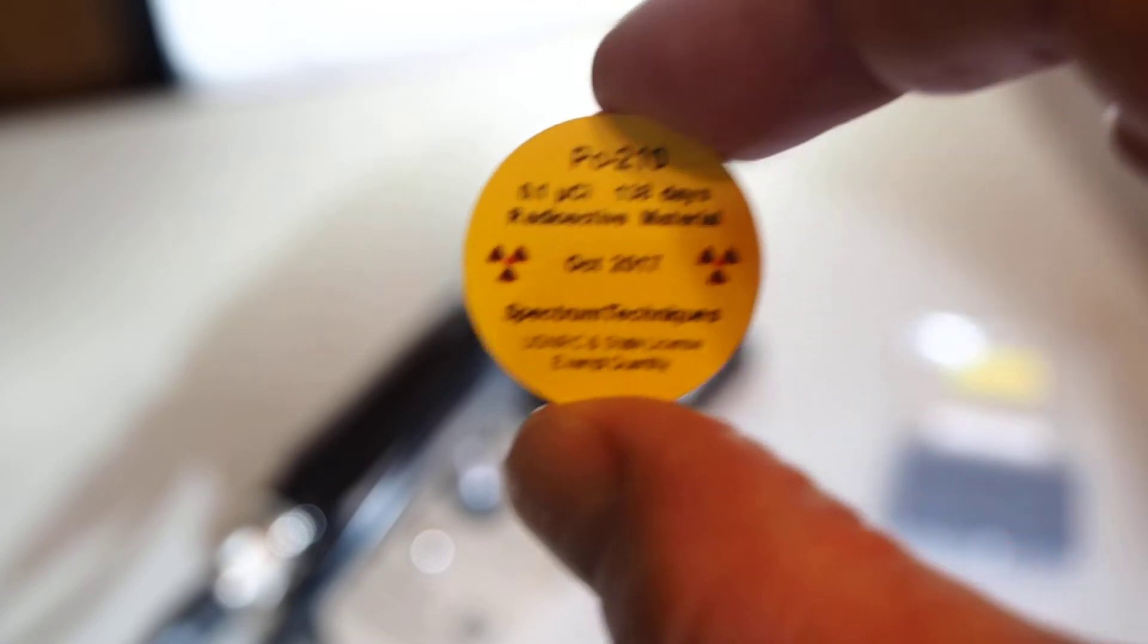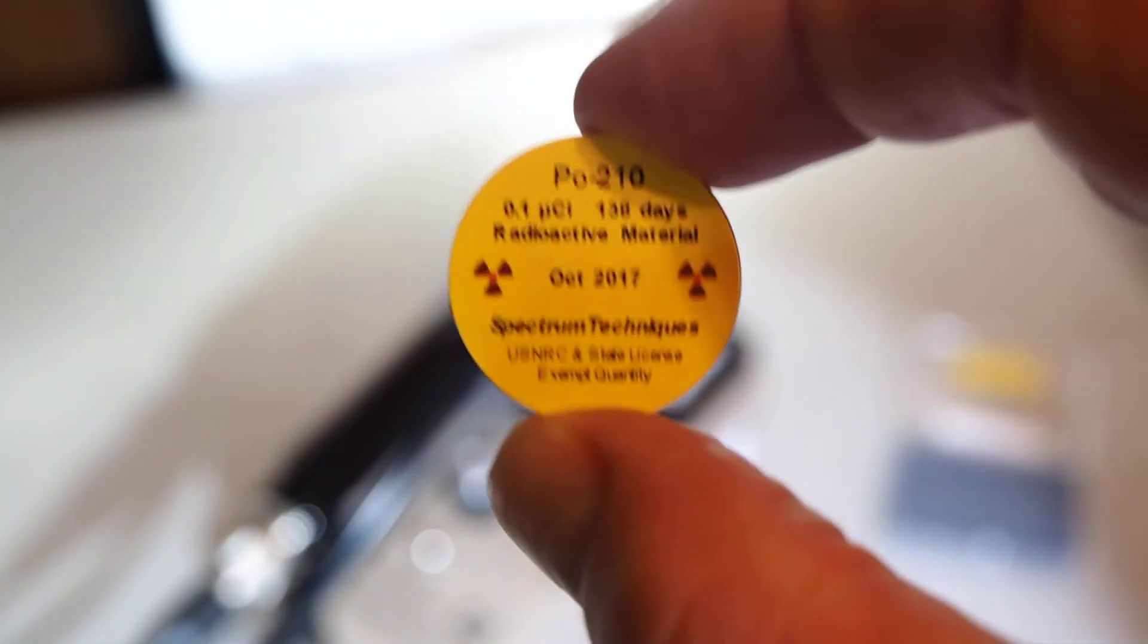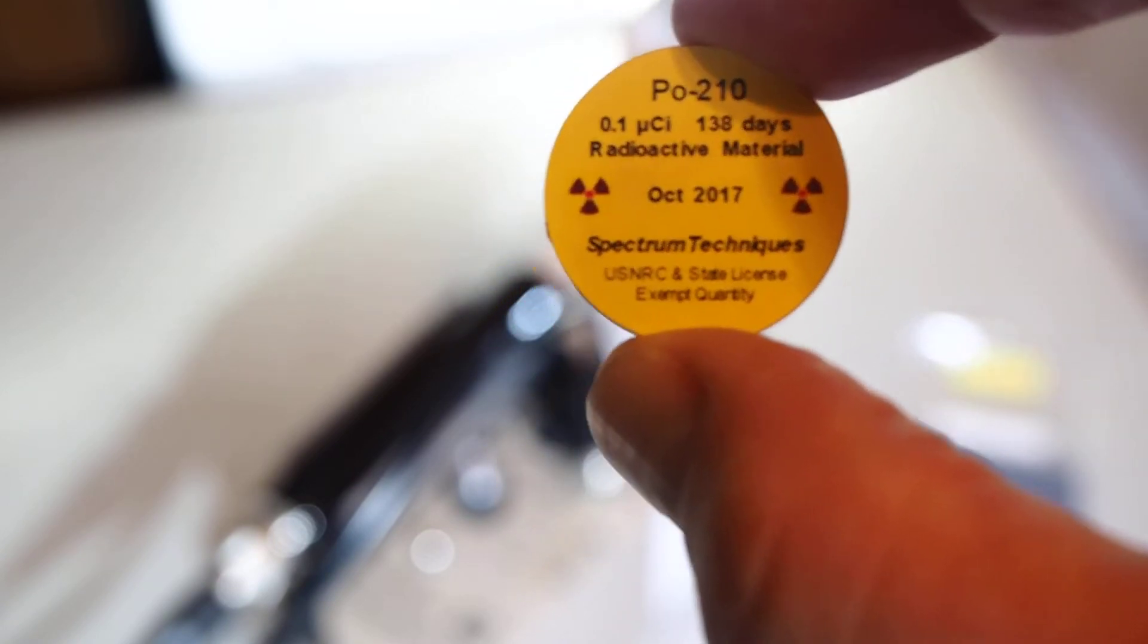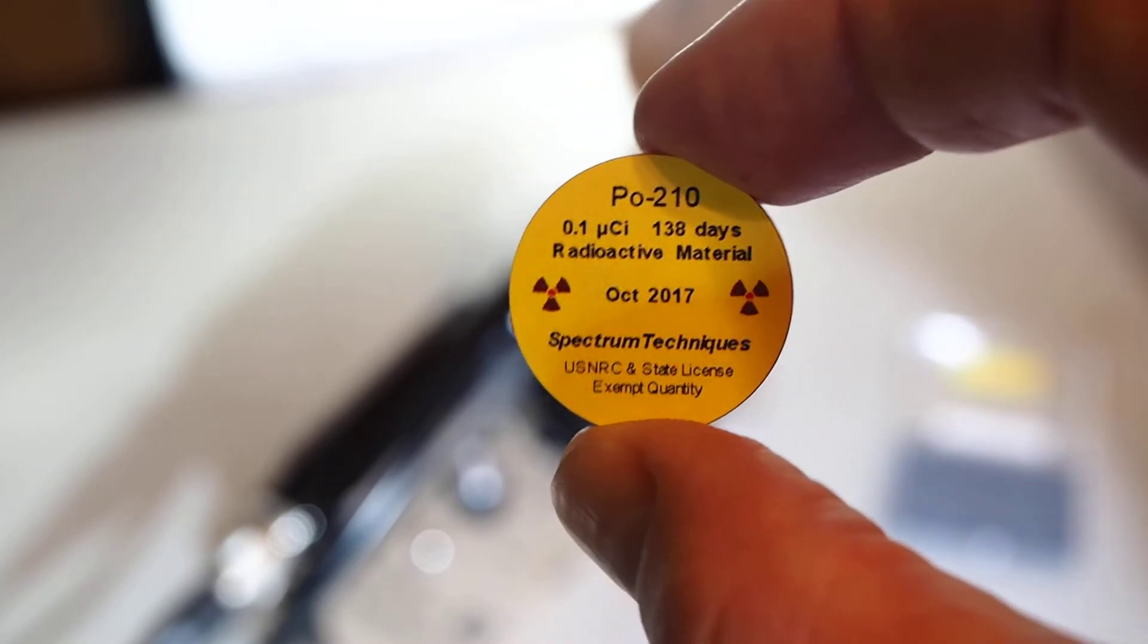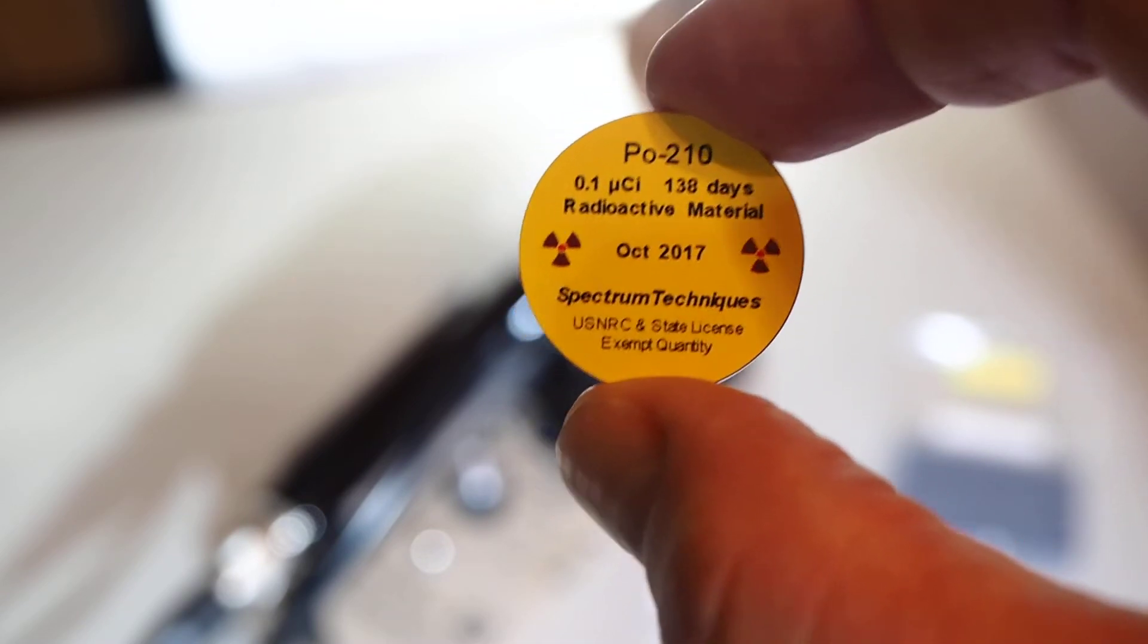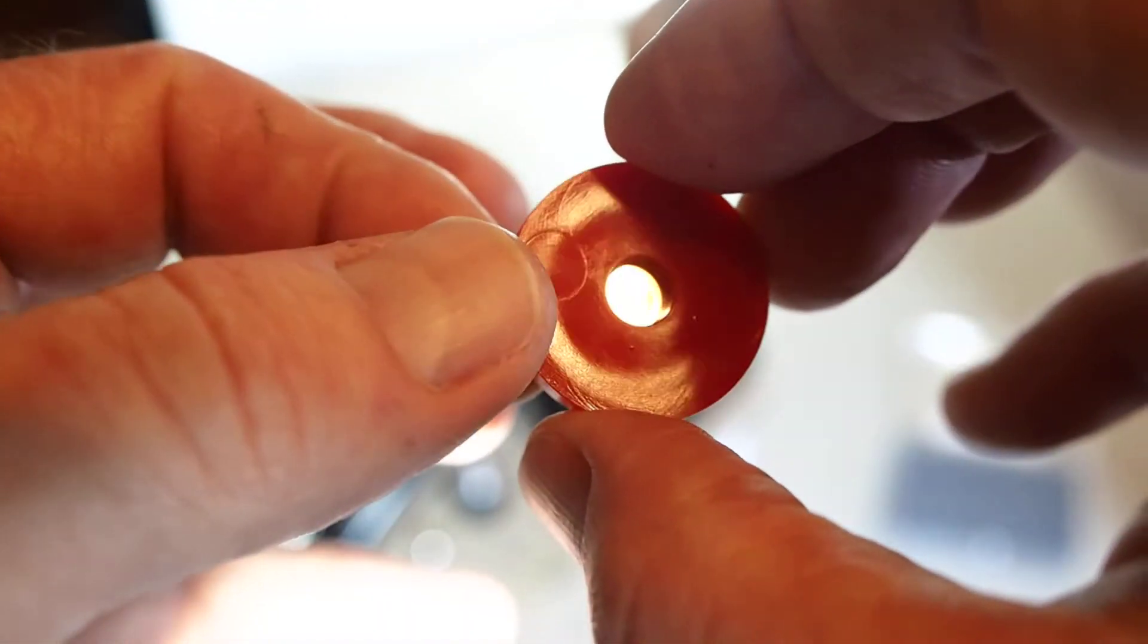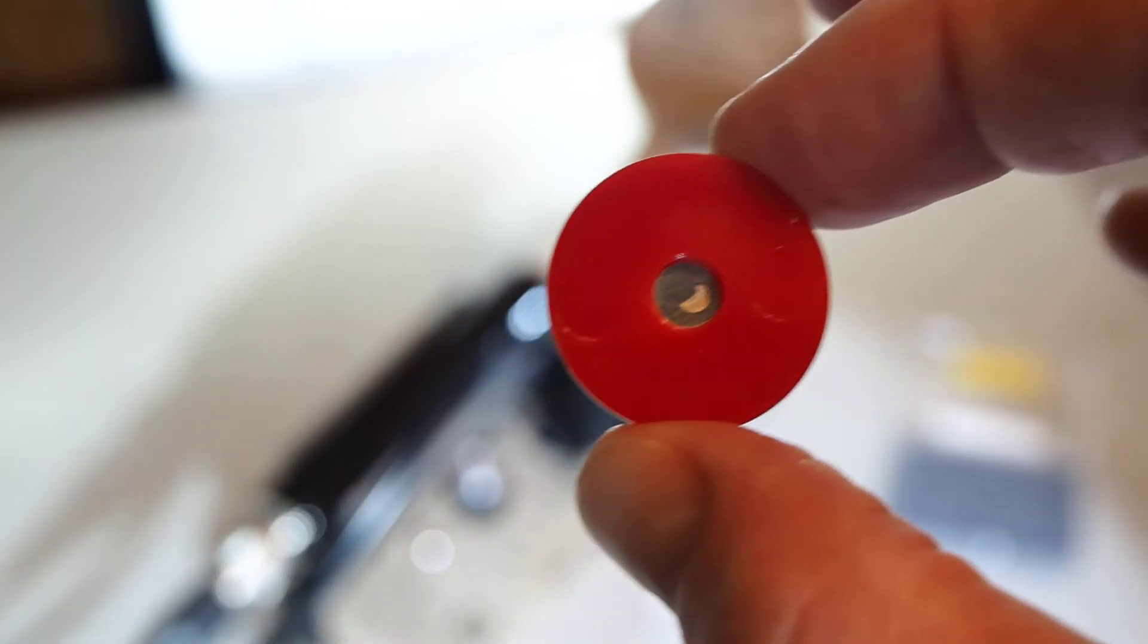Polonium-210 is one of the most deadly isotopes on the planet. Hundreds of thousands of times more toxic than hydrogen cyanide. One gram of this material can kill 50 million people estimated. Of course, this disk source is a whole lot less than that and it's perfectly safe because it's enclosed in this plastic capsule.